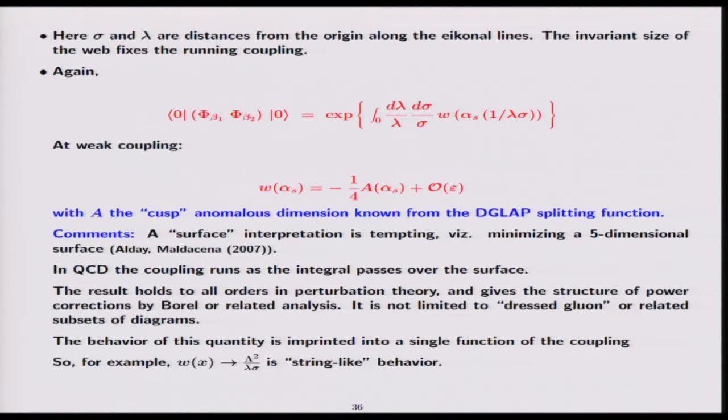This function only depends upon the product of these two coordinates. It's just an expansion in α_s, and in fact this expansion—there it is again, that's the same formula in red—in weak coupling it starts out as a cusp anomalous dimension but also in dimensional regularization has corrections of order ε. If you look at this integral, a surface interpretation of this result is tempting. It's interesting that the scale at which α_s is to be evaluated as you integrate over this surface is the minimal distance to a five-dimensional surface in duality.